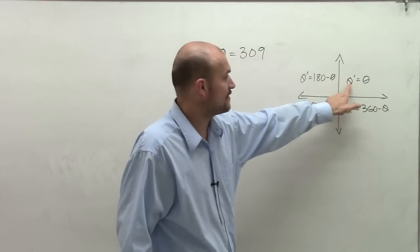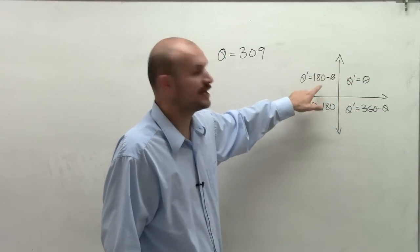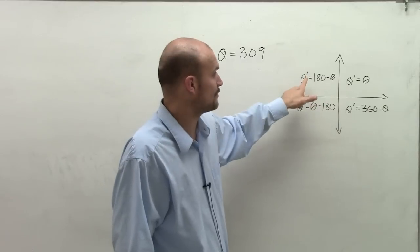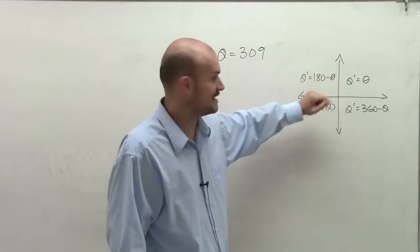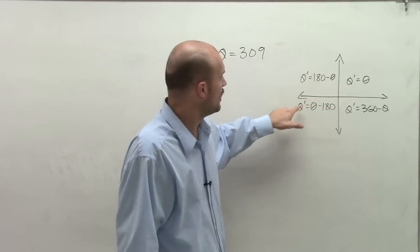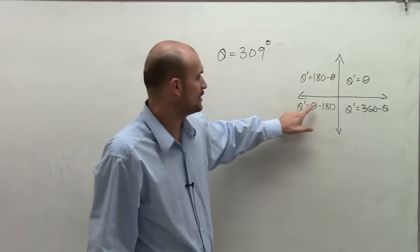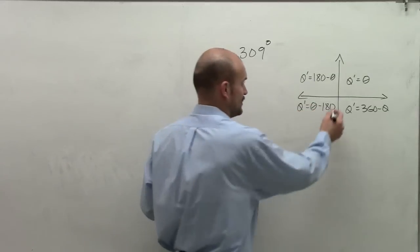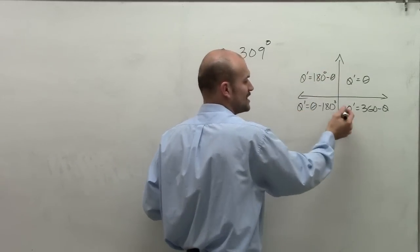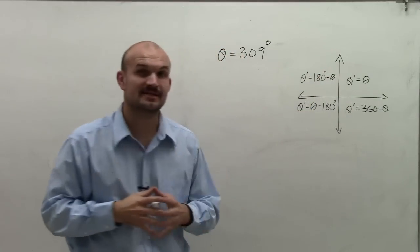In the first quadrant, theta prime is equal to theta. If you have an angle in the second quadrant, to find the reference angle theta prime, you just take 180 minus theta. And this is for degrees, because my answer is in degrees. So in the third quadrant, theta prime will equal theta minus 180 degrees. And in the fourth quadrant, my theta prime is going to equal 360 minus theta.